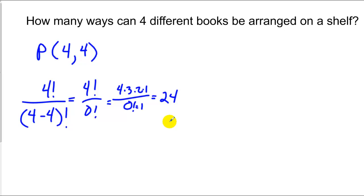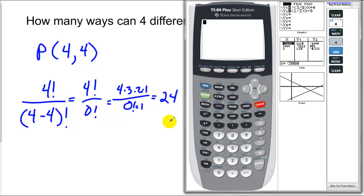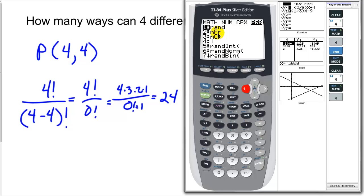We can also do this on our calculator, and we'll start out by hitting the number 4, moving to Math, going over to Probability, PRB. You notice here's our nPr, and then we're going to hit 4 again, followed by Enter, and that gets us our 24.